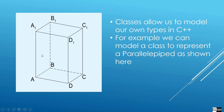Now that we know about initializer lists, we should try and model the 3D shape here. The class that we're going to use is going to have two member variables. One is going to be the base rectangle, and the other is going to be the height that will allow us to know how high it is and allow us to compute the volume of this thing. So let's head to Qt Creator and do that.